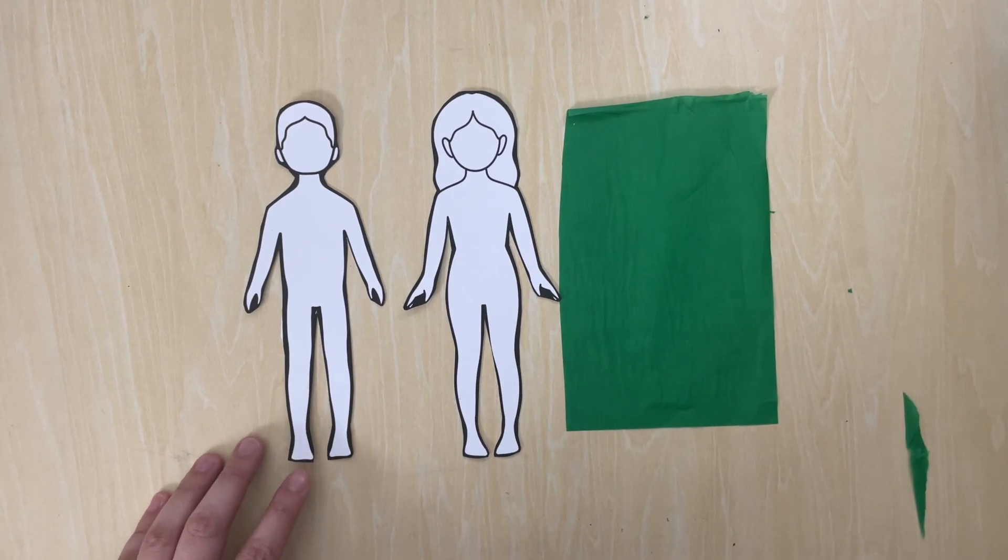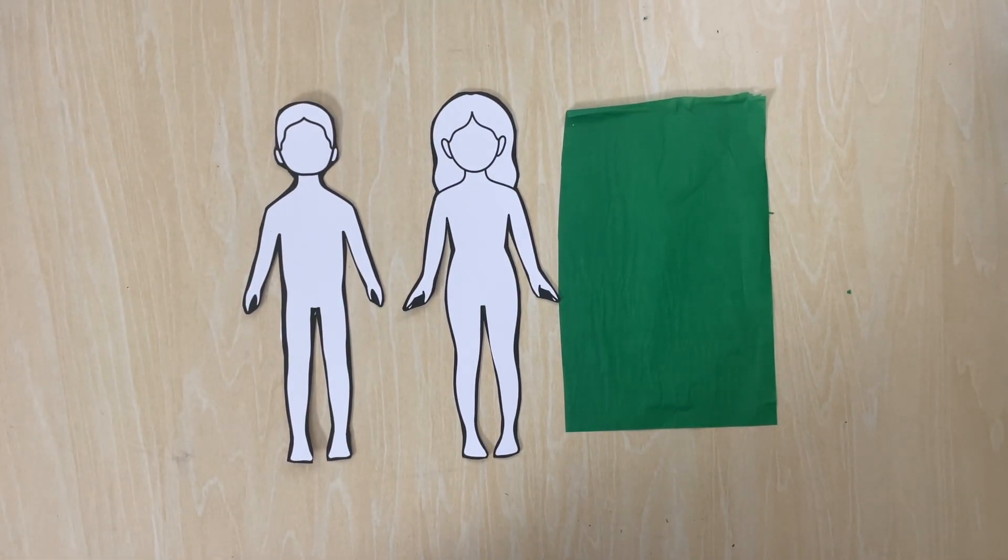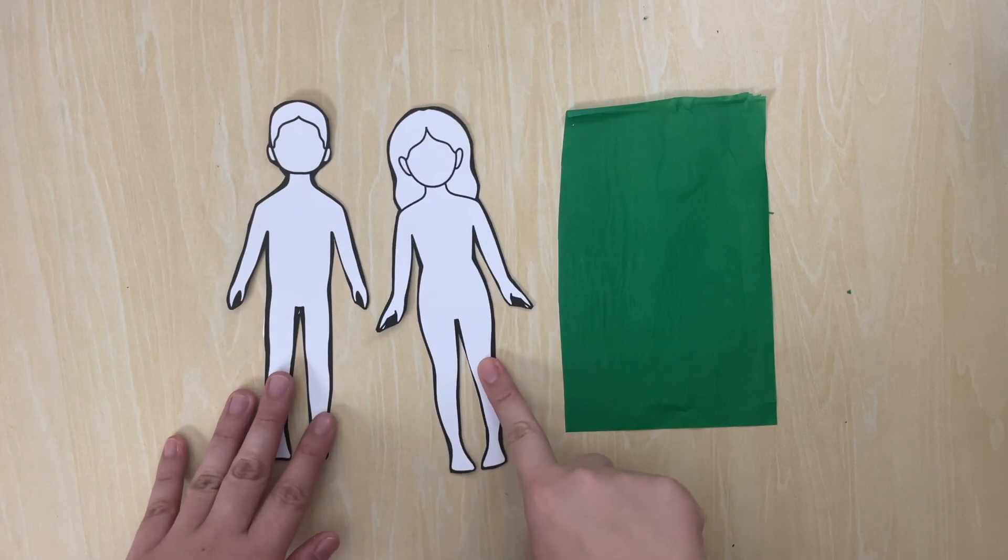So the complete craft kit should contain a pair of paper dolls, one of Adam and one of Eve, and one piece of Japanese paper.